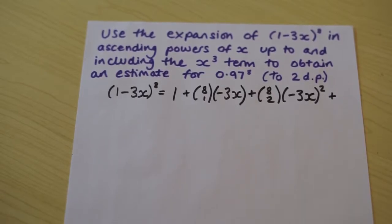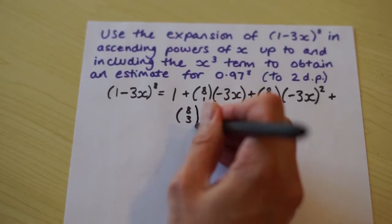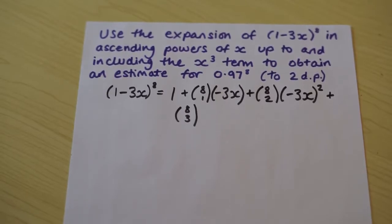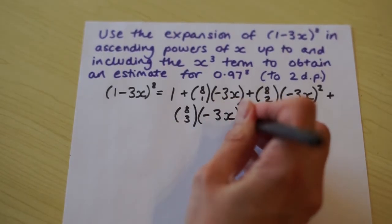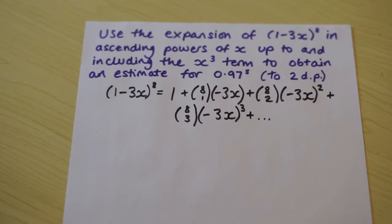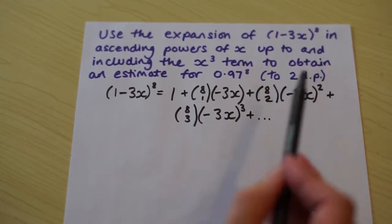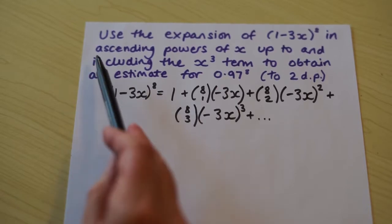Okay, so 8 choose 3, and the a term is 1 to the power 5, which is just 1, we don't need to write that. The b term. Okay, so that's where we are going to stop, because it's told us to expand the bracket in ascending powers of x, which we've done, definitely ascending, and we're stopping at the x cubed term. We're certainly including it though as well.